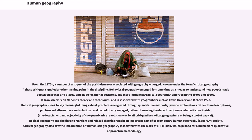Known under the term critical geography, these critiques signaled another turning point in the discipline. Behavioral geography emerged as a means to understand how people perceived spaces and places and made locational decisions. The more influential radical geography emerged in the 1970s and 1980s, drawing heavily on Marxist theory and techniques, and is associated with geographers such as David Harvey and Richard Peet. Radical geographers seek to provide explanations rather than descriptions, put forward alternatives and solutions, and be politically engaged, rather than using the detachment associated with positivists.